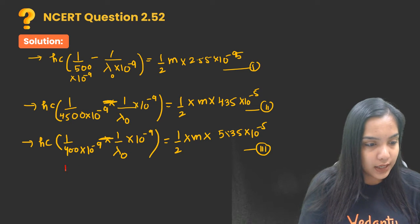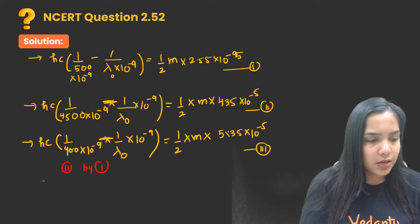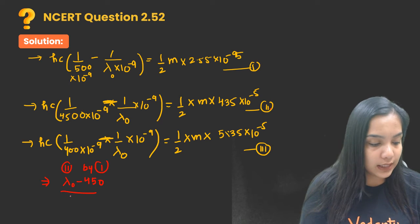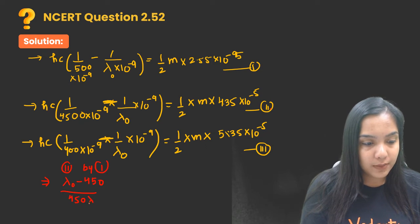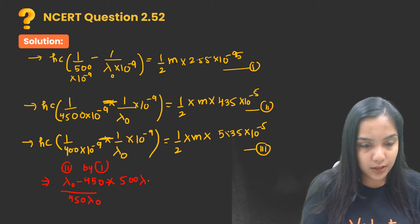By simplifying and solving it, I am getting lambda naught by 450. I hope you know how to do the LCM. You will do it like this: 450 lambda naught into 500 lambda naught divided by lambda naught minus 500.